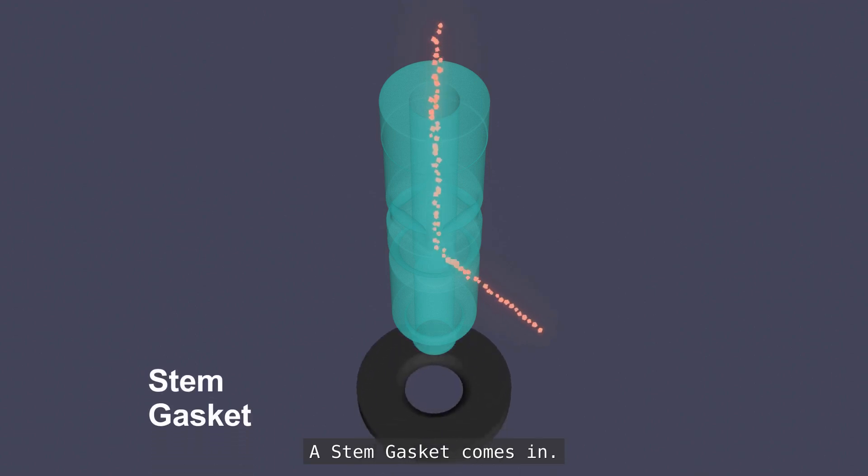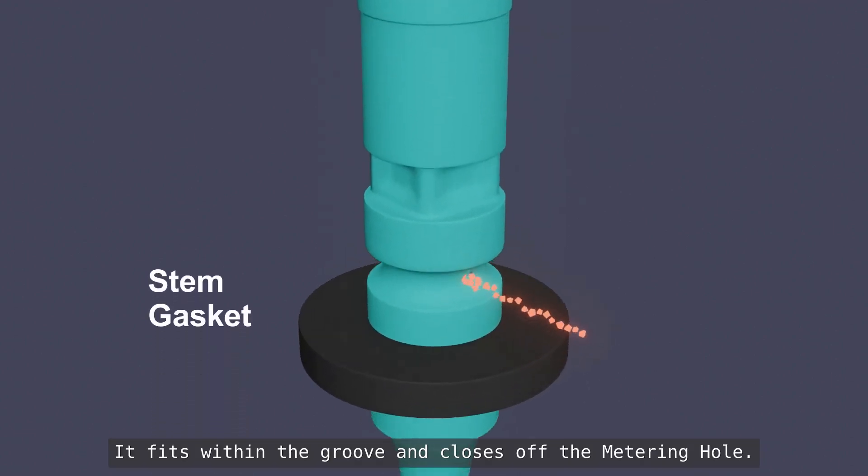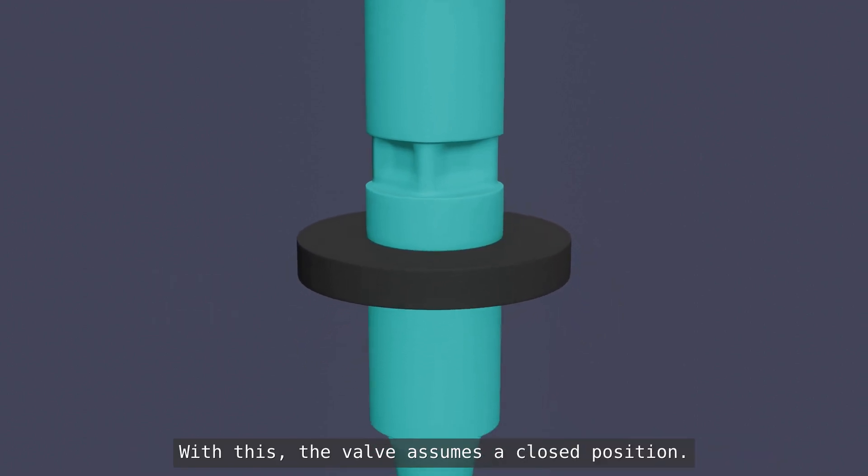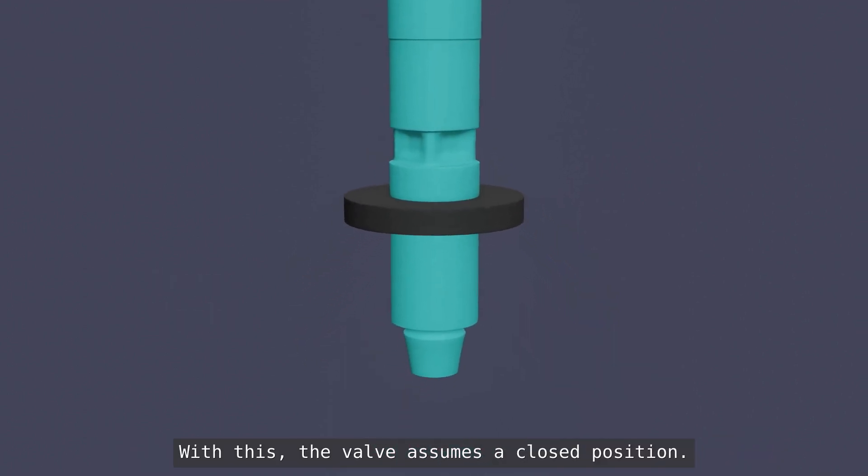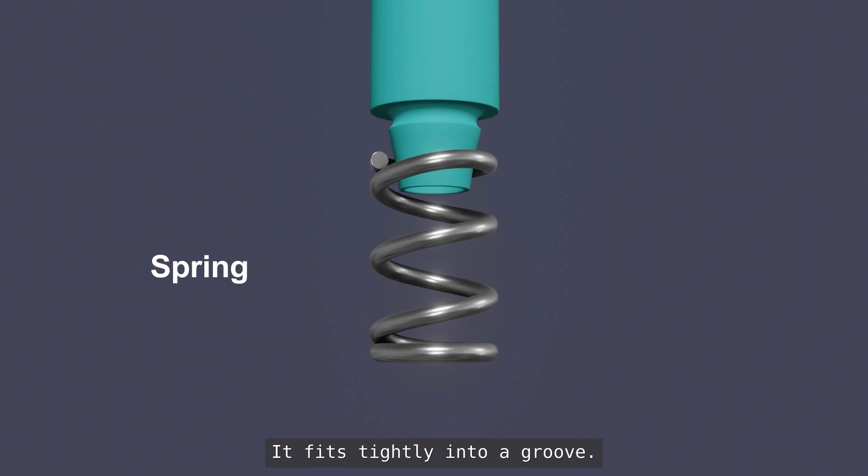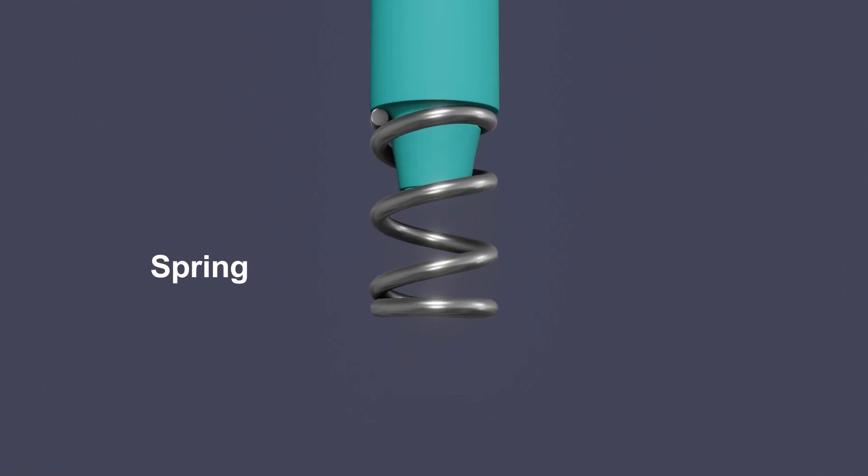A stem gasket comes in. It fits within the groove and closes off the metering hole. With this, the valve assumes a closed position. A spring takes up its position at the bottom end of the stem. It fits tightly into a groove. Later, we will see how it assists in the actuation process of the valve.